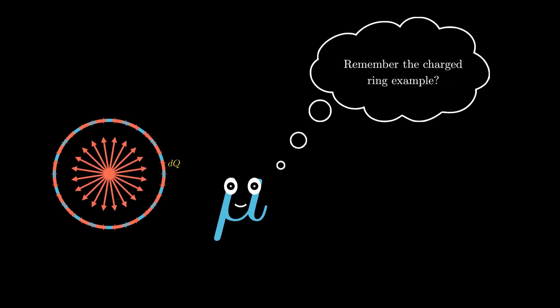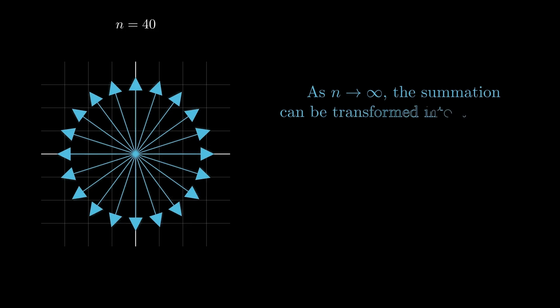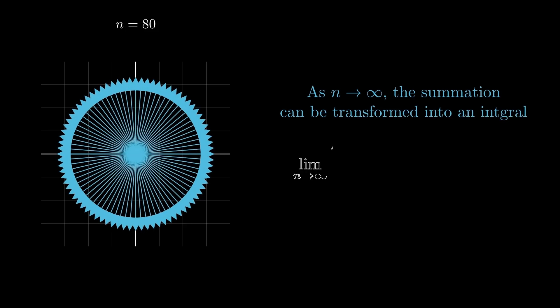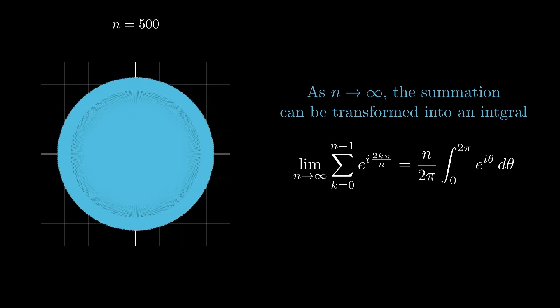The beauty of this problem is that it isn't limited to just a finite number of vectors. We can use the same principle to prove that the sum is 0 even for continuous force distribution, just like the charging example we saw earlier. Now, when we move from a discrete set of vectors to continuous distribution, the summation can be transformed into an integral as n tends to infinity: n over 2π times integration from 0 to 2π of e to the iθ dθ.